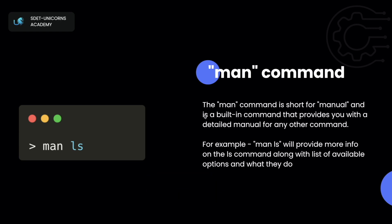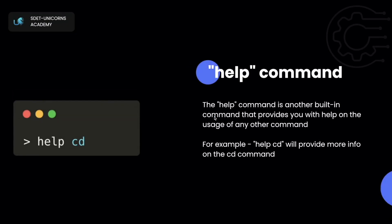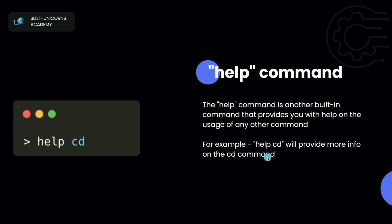In cases where the man command doesn't work, we can use the help command. The help command is another built-in that provides usage information for shell built-in commands. So for cd, you can simply run help cd. As for knowing which to use — just try one and if it doesn't work, switch to the other. Most of the time man works, but if not, try help.